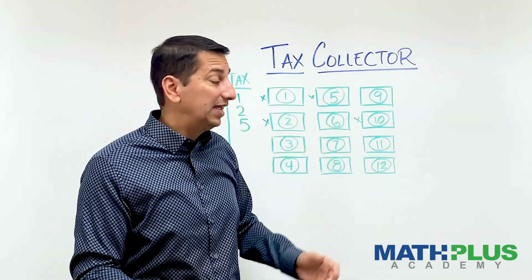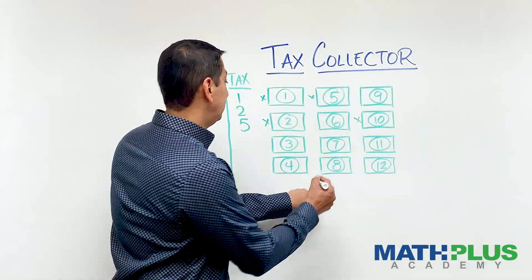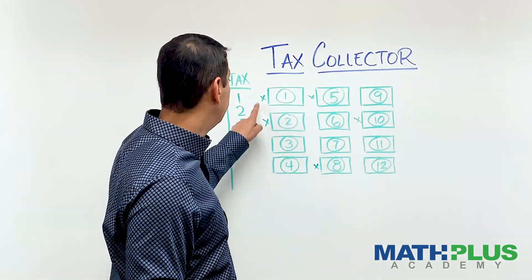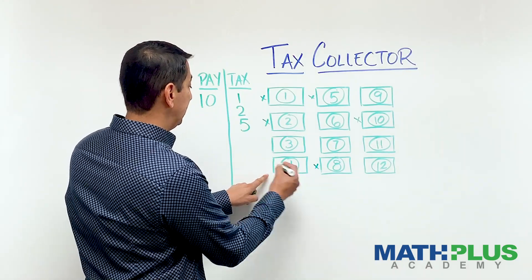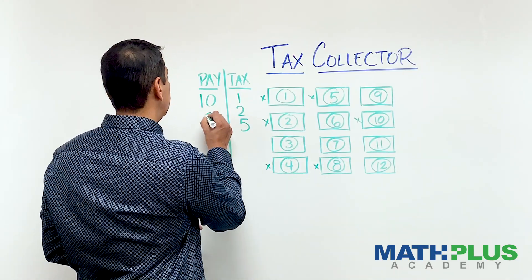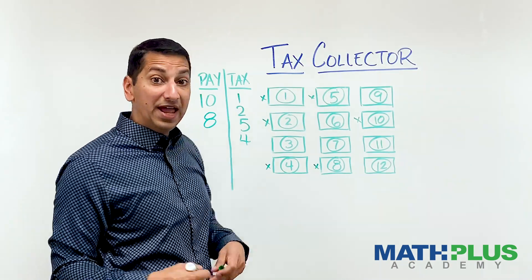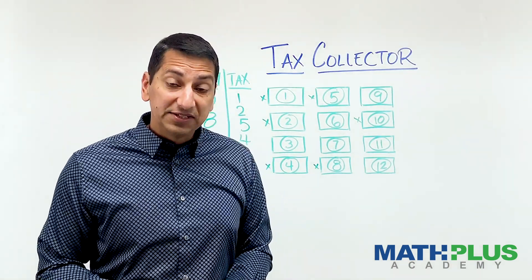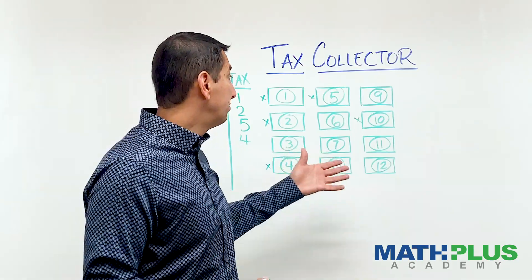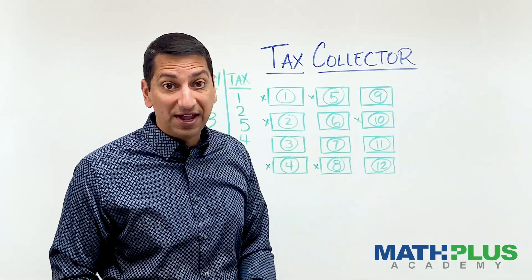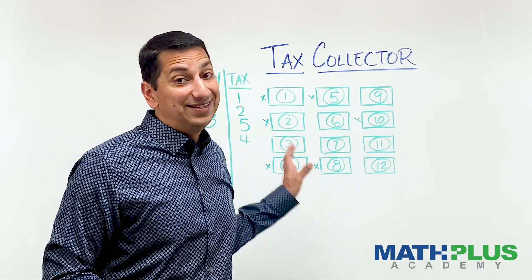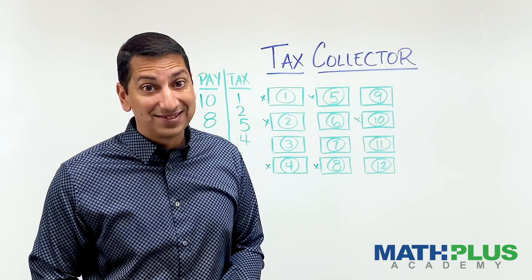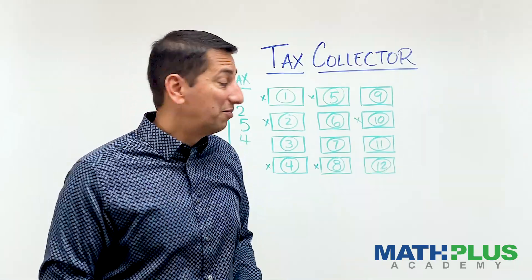Maybe I'll take 8. That seems pretty good. The factors of 8 are 1, 2, and 4. 1 and 2 are gone, but 4 is still there, so the tax collector can grab that for tax. I get 8, the collector gets 4. Again, I'm doing pretty well. This is going to continue until you get to the point where there are no more numbers that you can take because all of the factors are gone. When that happens, the tax collector clears the board and takes all of those as tax. Life is not fair, but that's how it works.